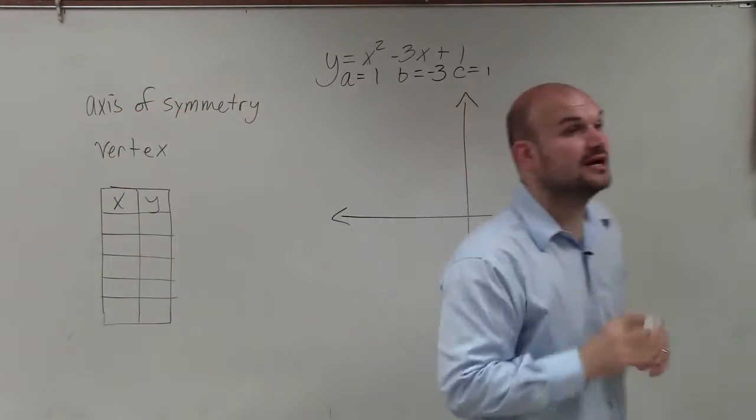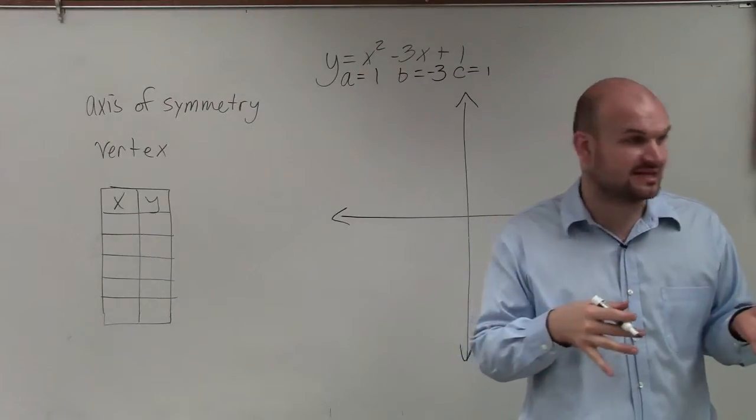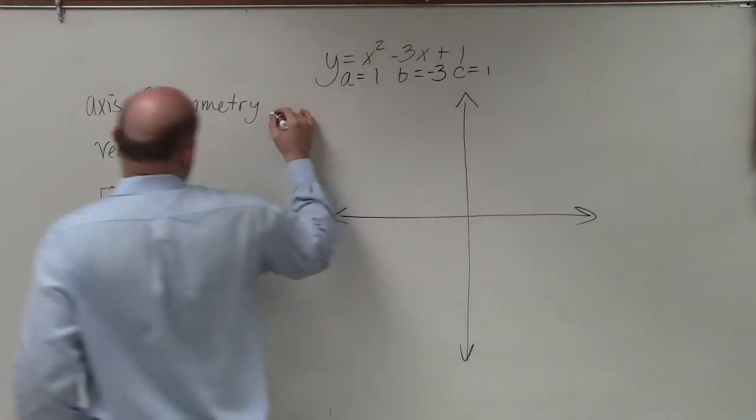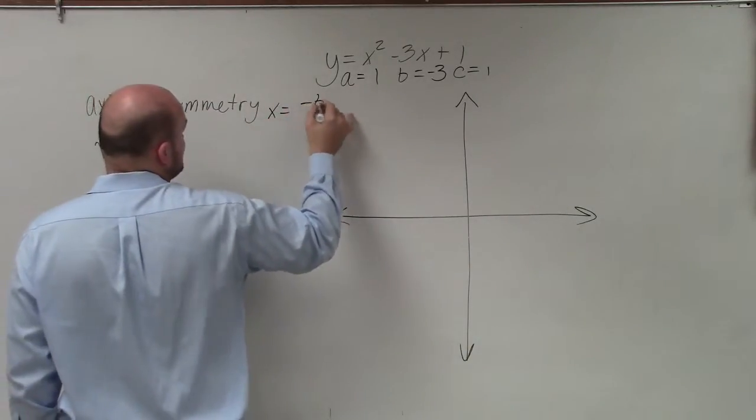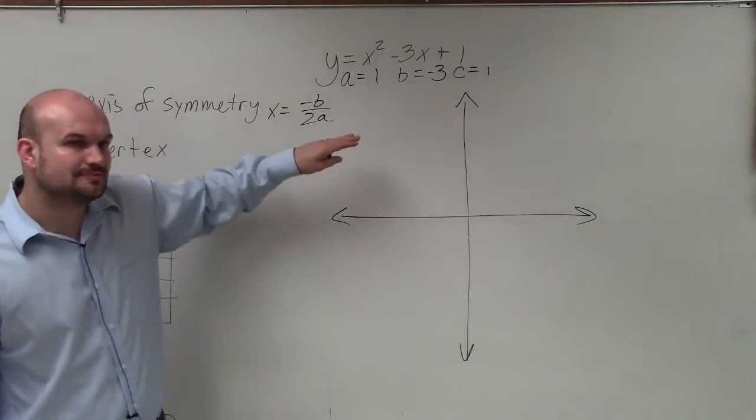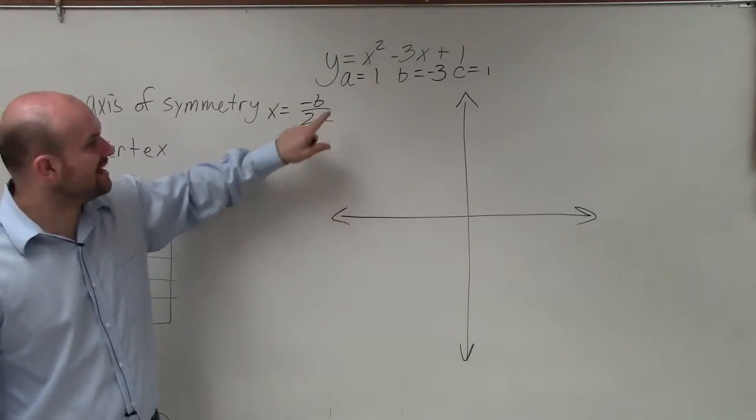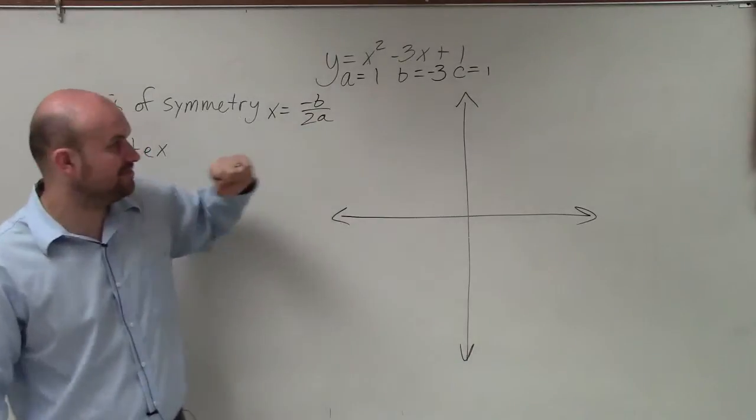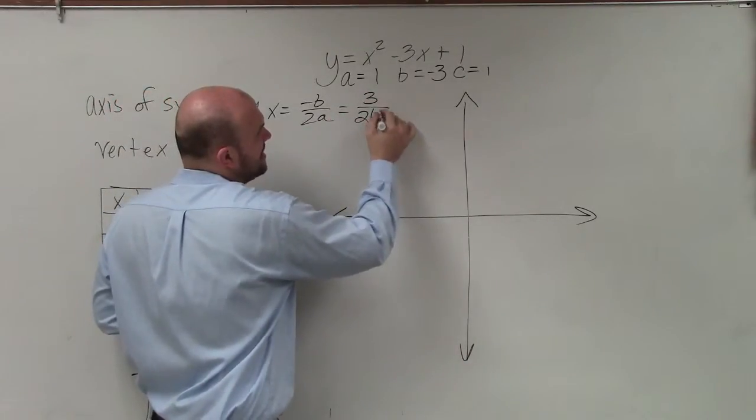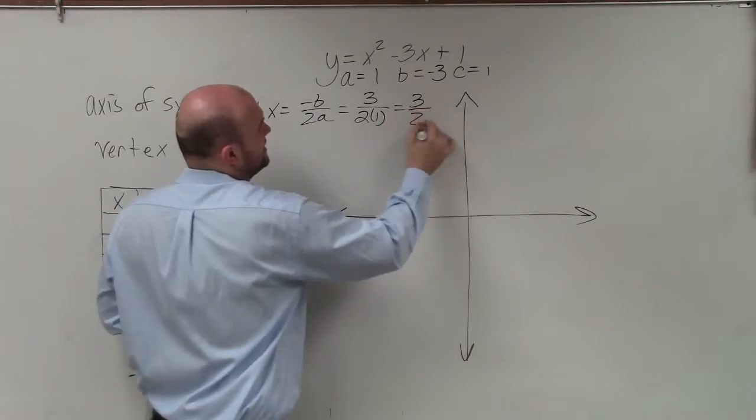Now what we were talking about going through this, the first thing we want to do is identify what the axis of symmetry is. Now remember, the axis of symmetry is going to be your vertical line. And the formula we have for that is x equals opposite of B divided by 2A. So we're going to plug in those values for B and A. So the opposite of B is positive 3 divided by 2 times 1, so our axis of symmetry is 3 halves.